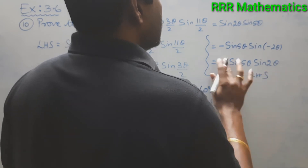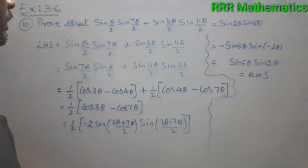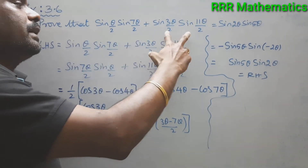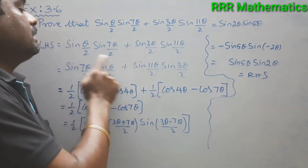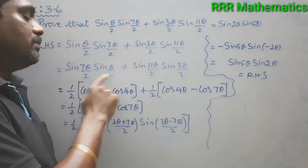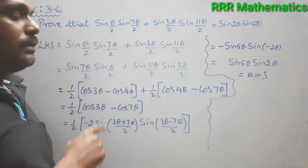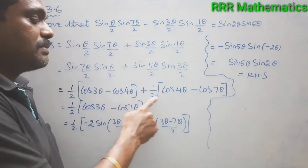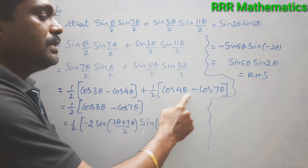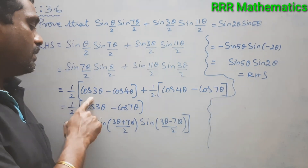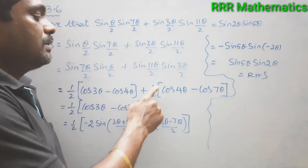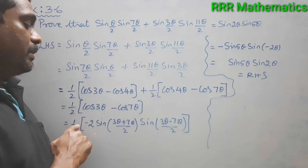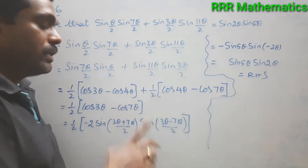Got it? Let me recap. The left hand side has two products of sin A·sin B. I interchanged the terms so that subtraction gives a positive value — greater minus smaller. Applying ½[cos(A−B) − cos(A+B)] to each: ½[cos 3θ − cos 4θ] + ½[cos 4θ − cos 7θ]. Taking ½ common, cos 4θ cancels, leaving ½[cos 3θ − cos 7θ].